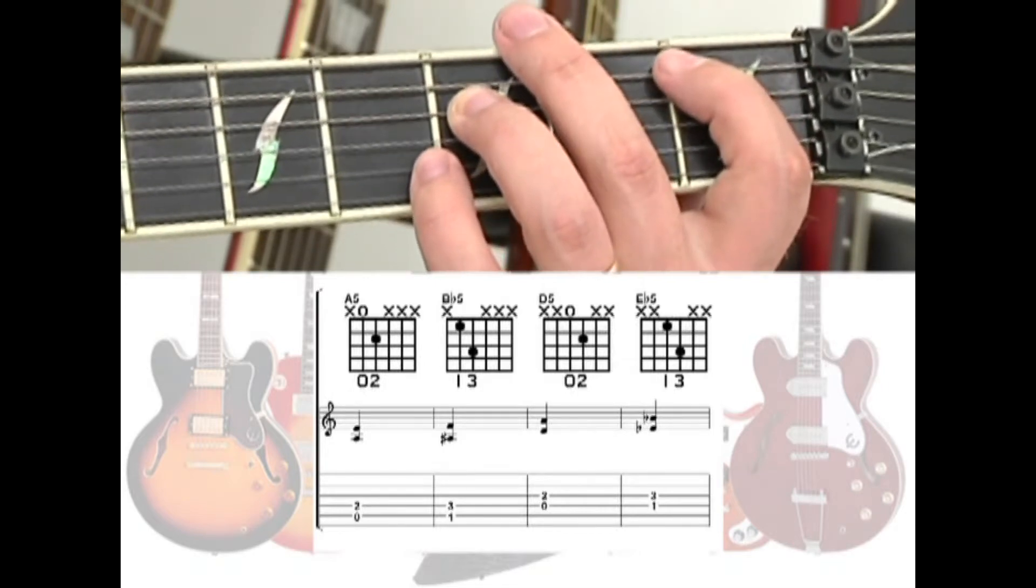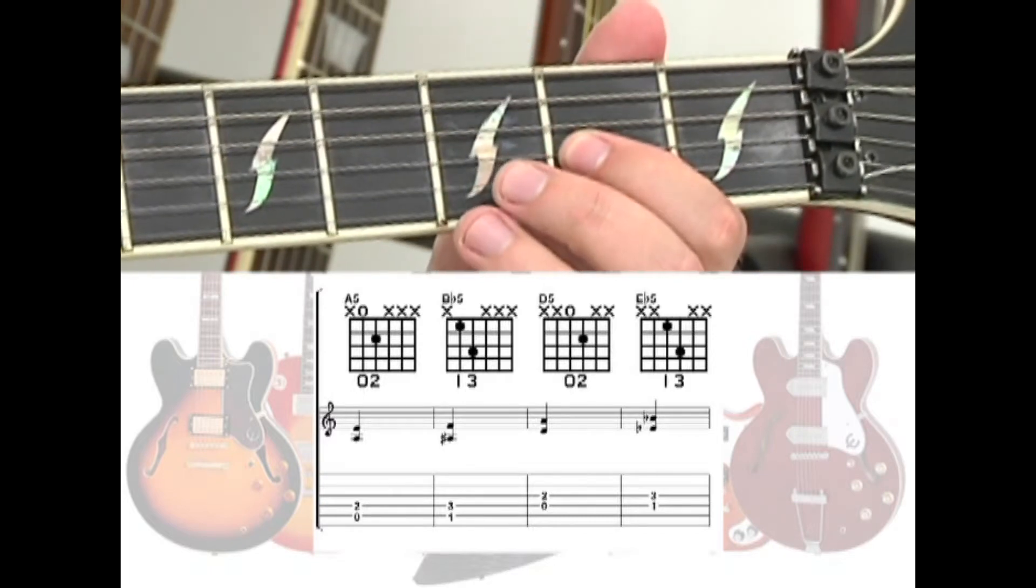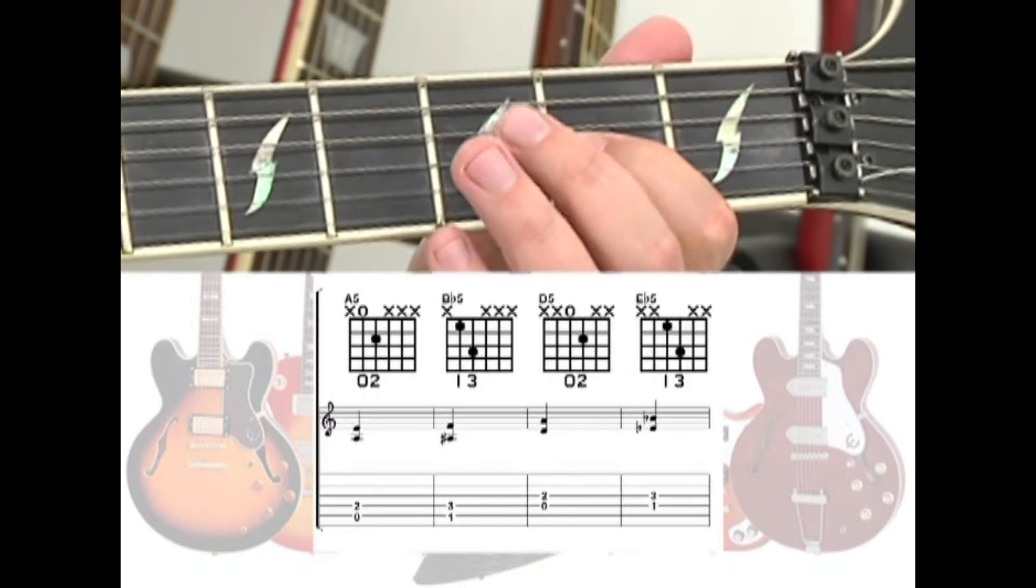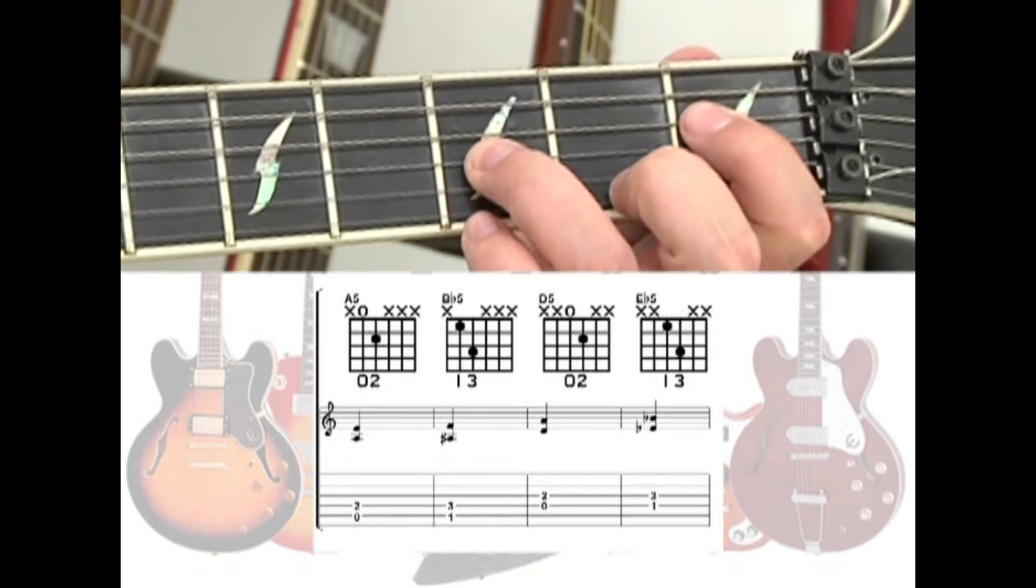Move the open shape to the 4th and 3rd strings and you have a D5 power chord. Up one fret and you have an Eb5.